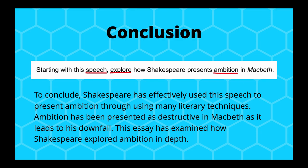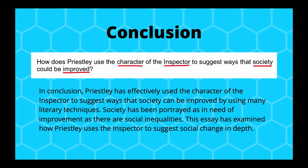For the Macbeth question, a conclusion could read: 'To conclude, Shakespeare has effectively used the speech to present ambition through many literary techniques. Ambition has been presented as destructive in Macbeth as it leads to his downfall. This essay has examined how Shakespeare explored ambition in depth.' For the Priestley question: 'In conclusion, Priestley has effectively used the character of the inspector to suggest ways that society can be improved. Society has been portrayed as in need of improvement due to social inequalities. This essay has examined how Priestley uses the inspector to suggest social change in depth.'